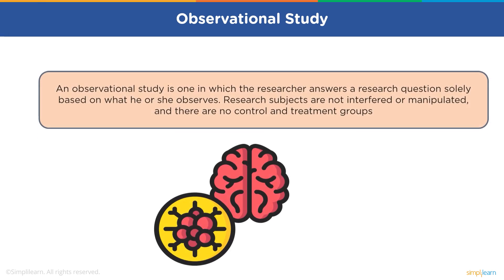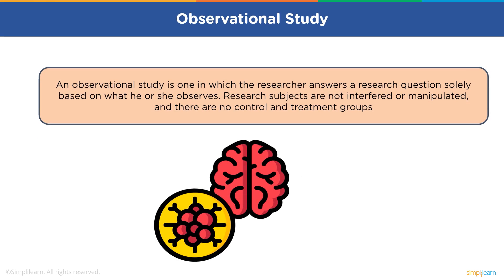Observational study. An observational study is when researchers are looking at the effect of some types of intervention, risks, a diagnostic test or treatment without trying to manipulate who or what the subject is. There is no interference on the research subjects.